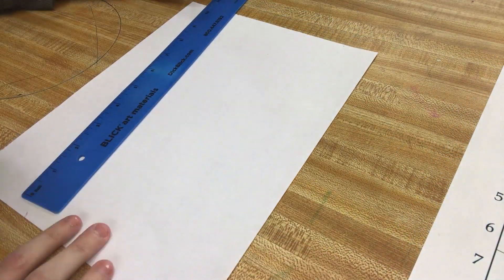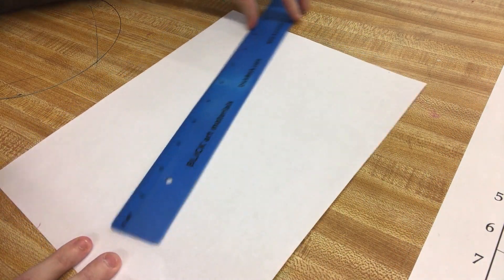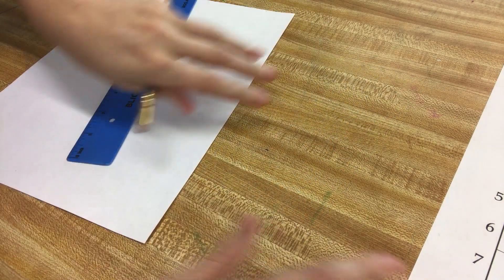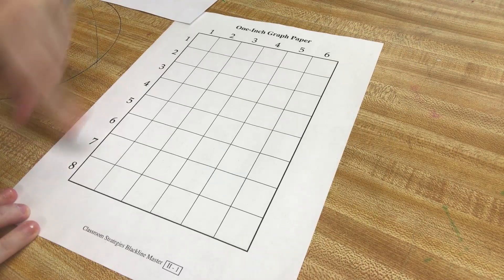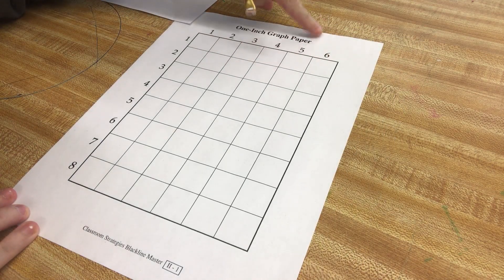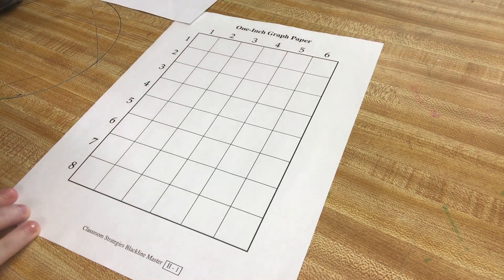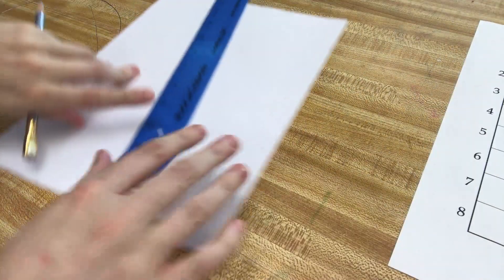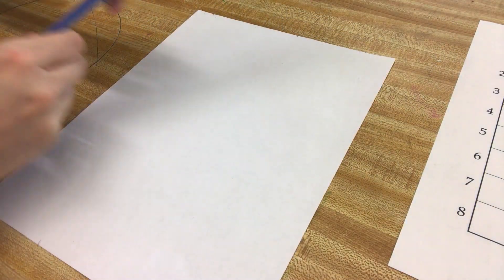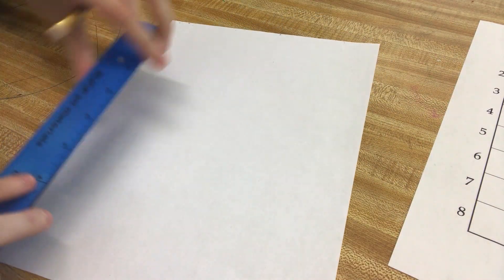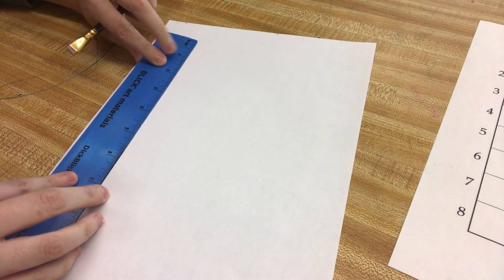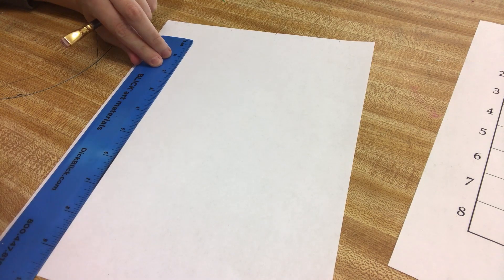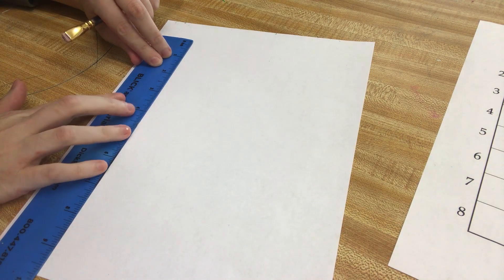You're going to get a white piece of copy paper and a ruler. They have an 8 inch by 6 inch grid, so we are going to recreate that. I'm going to take my ruler and put it kind of on the left side of my paper, not all the way on the left.